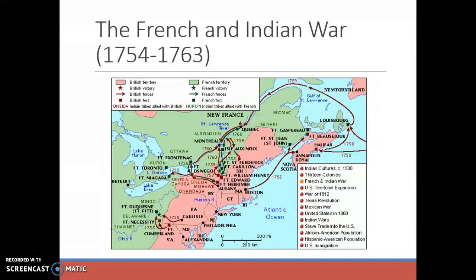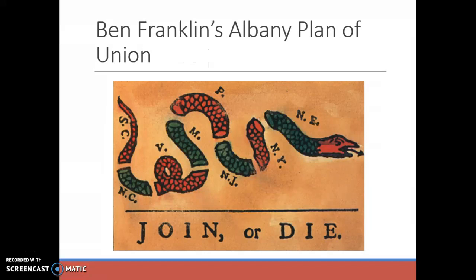As tensions continued between the two countries, Benjamin Franklin, a very prominent colonist and enlightened thinker embracing ideas from the Enlightenment era, is going to propose this plan called the Albany Plan of Union to unite the colonies and to protect themselves against the French. He basically thinks they need to unite together and form one kind of union to be a sole force that would protect against any sort of French attack.